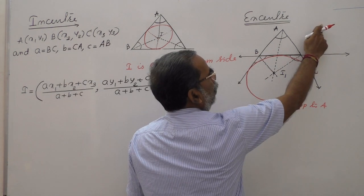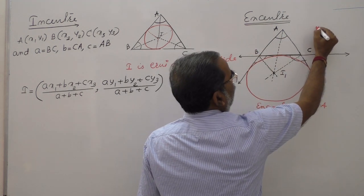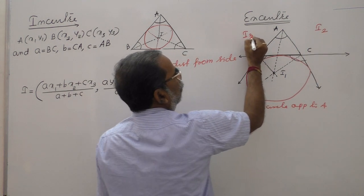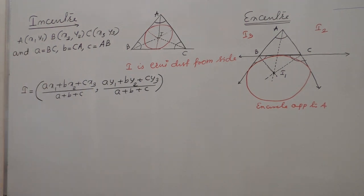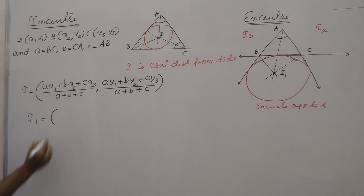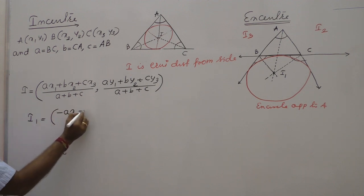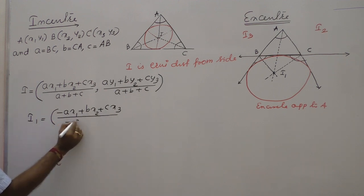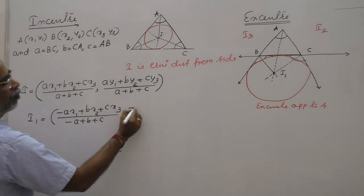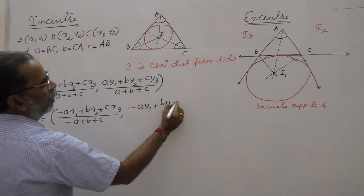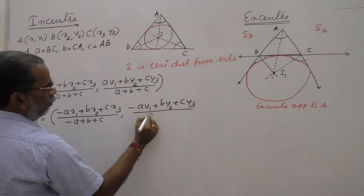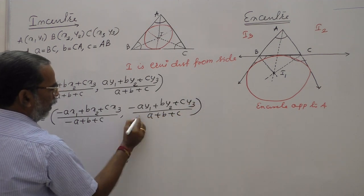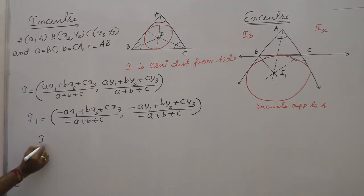Similarly, there are two more excenters. Excenter I₂ opposite to B has formula: I₂ = ((ax₁ − bx₂ + cx₃)/(a−b+c), (ay₁ − by₂ + cy₃)/(a−b+c)). Excenter I₃ opposite to C has formula: I₃ = ((ax₁ + bx₂ − cx₃)/(a+b−c), (ay₁ + by₂ − cy₃)/(a+b−c)). For each excenter, wherever the corresponding vertex's side length appears, its sign is changed to negative.